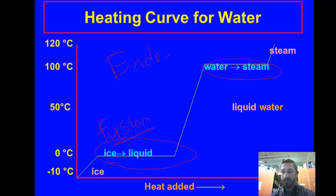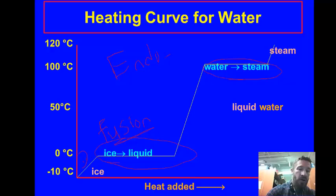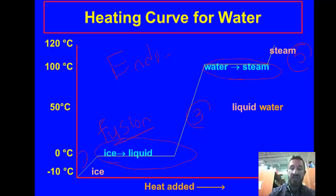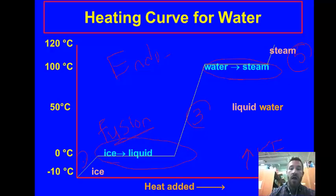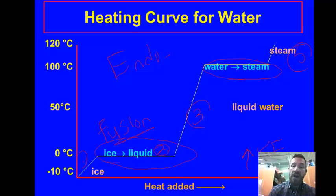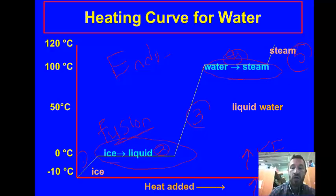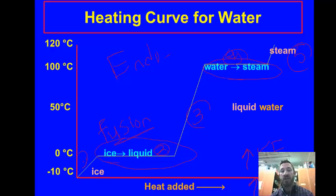We also want to look at the change in energy. Anytime the temperature is changing, we're increasing kinetic energy. At areas 1, 3, and 5, we have a temperature change, so you're going to have an increase in kinetic energy. But at the flat areas where temperature is not changing, energy is still going somewhere. At area 2, the melting or fusion area, or area 4, where it's vaporizing, we have an increase in potential energy. The energy goes in to break the bonds — from solid ice to liquid water, and liquid water to steam.